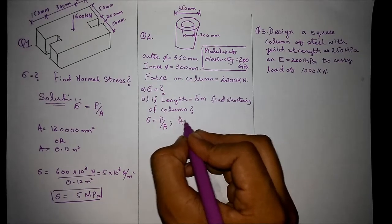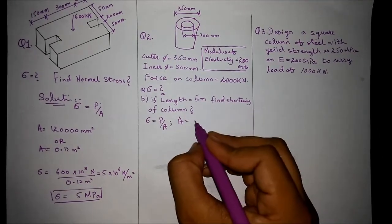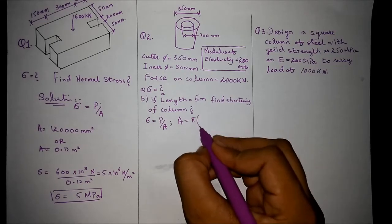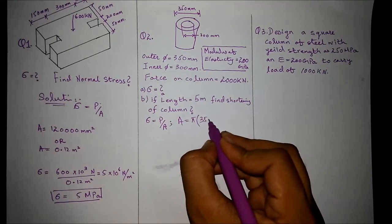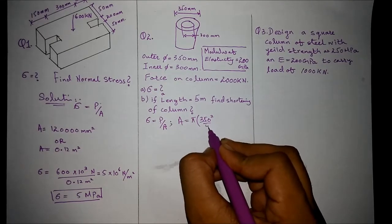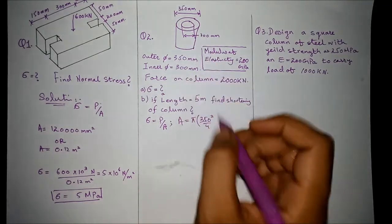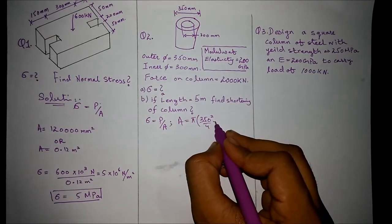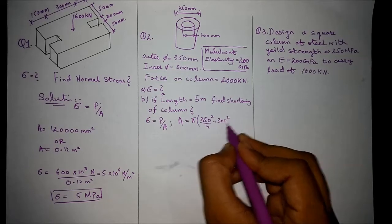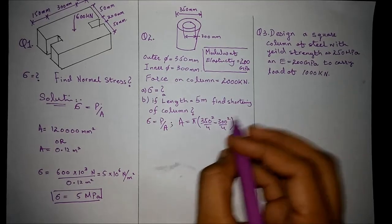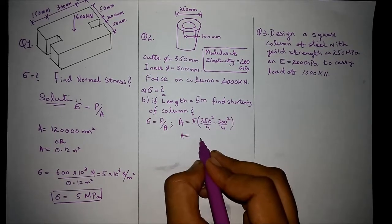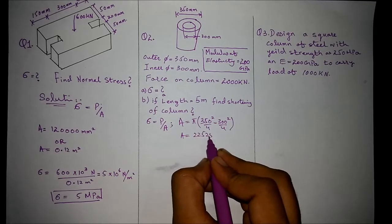Area may be calculated as, since it is circular and since it is hollow, we will be subtracting the hollow part. The area comes out to be 22525.